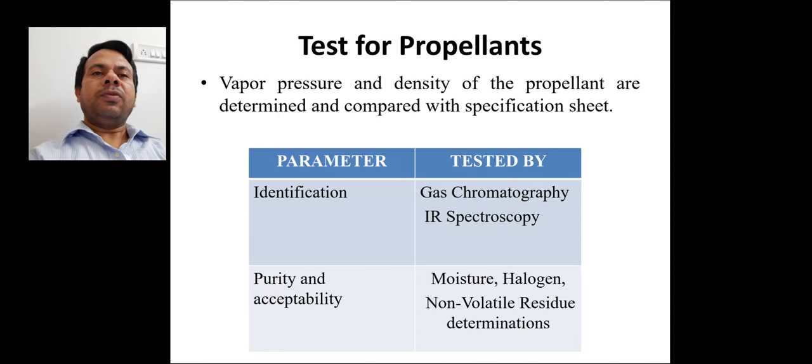For test of propellants, vapor pressure and density of the propellants are determined and compared with specification set. Identification of propellant is tested by gas chromatography and infrared spectroscopy. Purity and acceptability of the propellants are determined by moisture content determination, halogen determination and non-volatile residue determination.